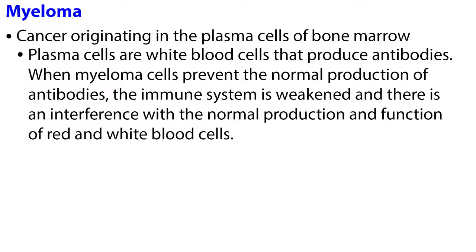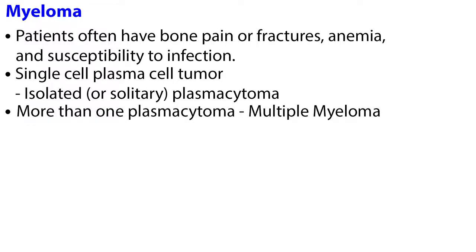Myeloma is a cancer originating in the plasma cells of bone marrow. Plasma cells are white blood cells that produce antibodies. When myeloma cells prevent the normal production of antibodies, the immune system is weakened and there is an interference with the normal production and function of red and white blood cells. Patients often have bone pain or fractures, anemia, and susceptibility to infection. A single plasma cell tumor is called an isolated or solitary plasmacytoma, and more than one is called multiple myeloma.